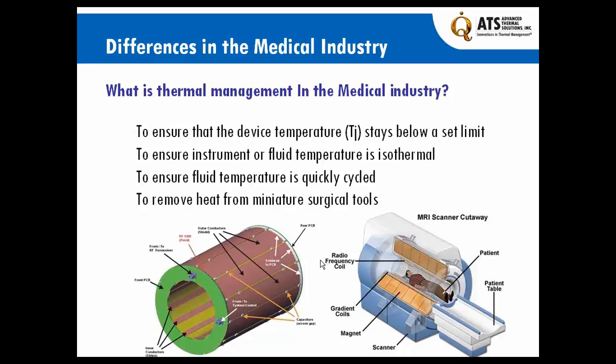Next, there are applications that require temperatures or fluids to be quickly cycled in temperature, things such as DNA replication or liquid or tissue analysis. For DNA replication, temperature fluctuations must be undertaken between 10 to 100 times per second between two very tight temperature limits, higher and lower.